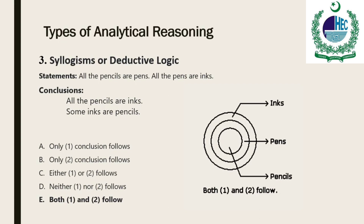In a syllogism, the more general premise is called the major premise — in this case, 'all mammals are animals.' The more specific premise is called the minor premise — here, 'all elephants are mammals.' The conclusion joins the logic of the two premises: therefore, all elephants are animals.